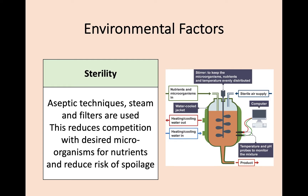The diagram on the right shows the industrial process of growing microorganisms and a variety of mechanisms to ensure environmental factors are controlled. The first is sterility: the use of aseptic techniques, filters, and steam ensures a sterile environment. This reduces the growth of any competing microorganisms and also reduces the risk of spoilage.